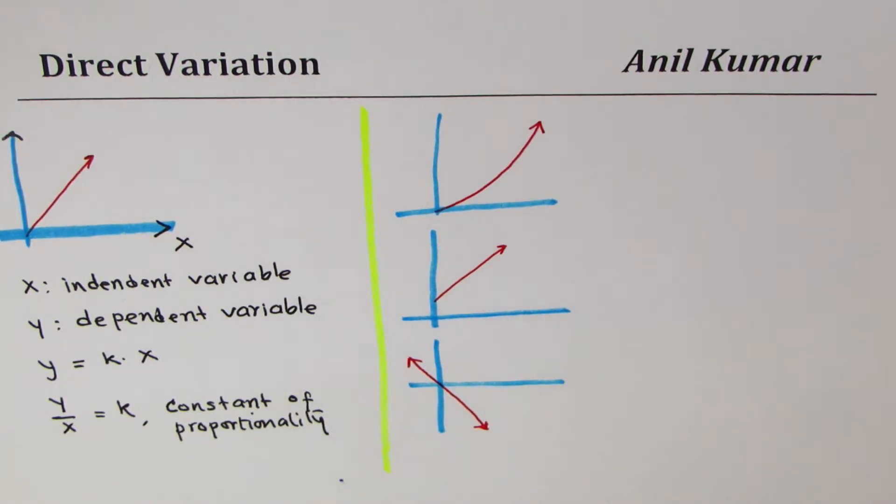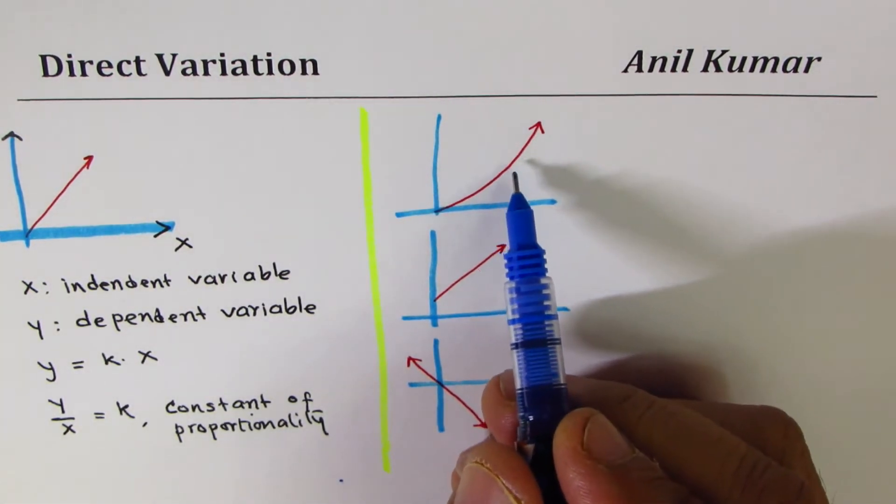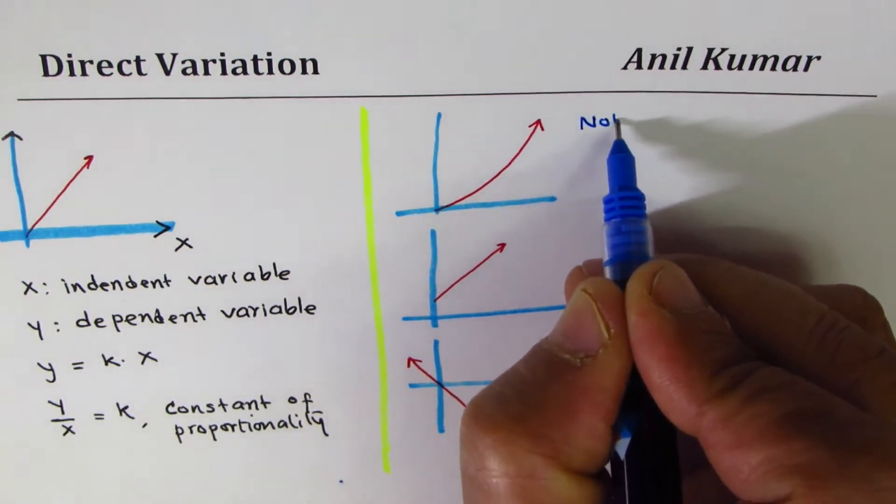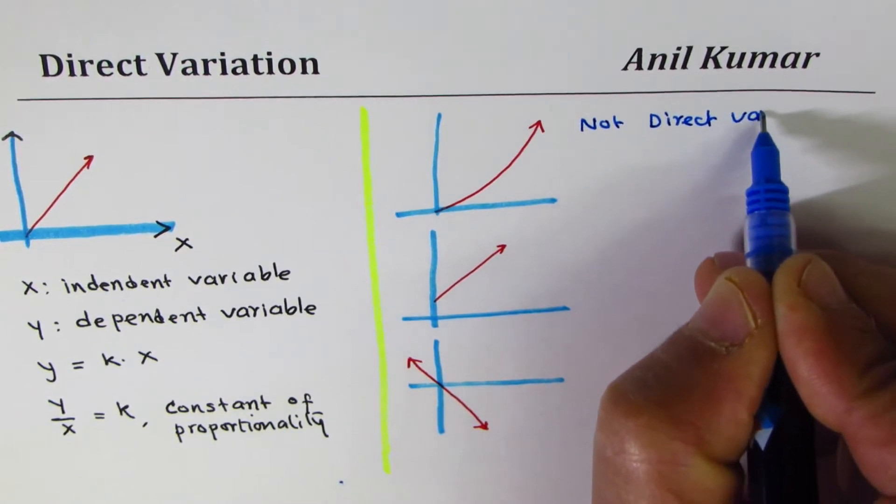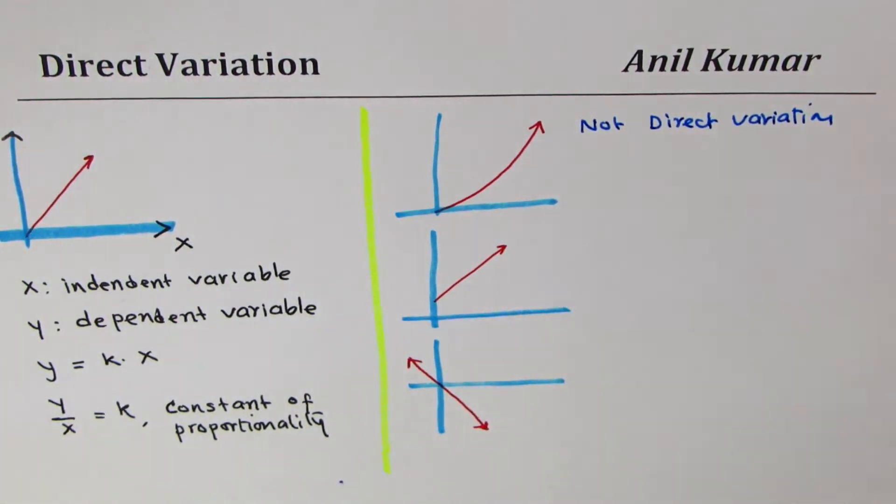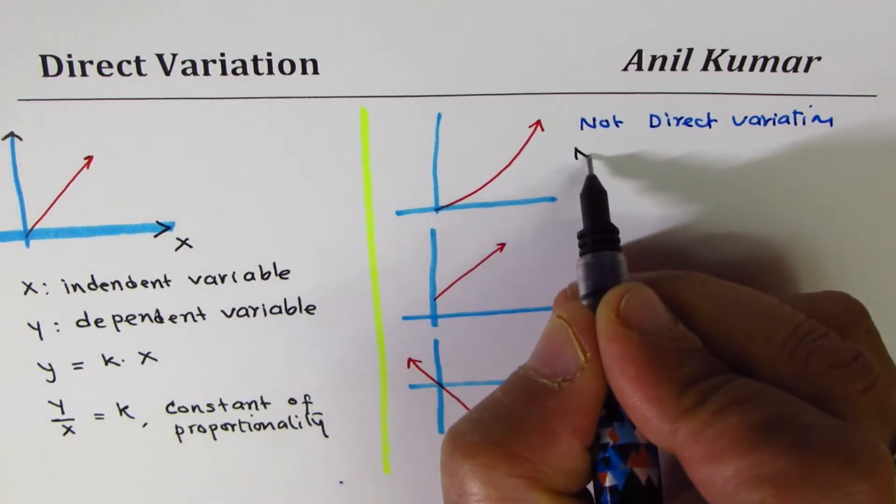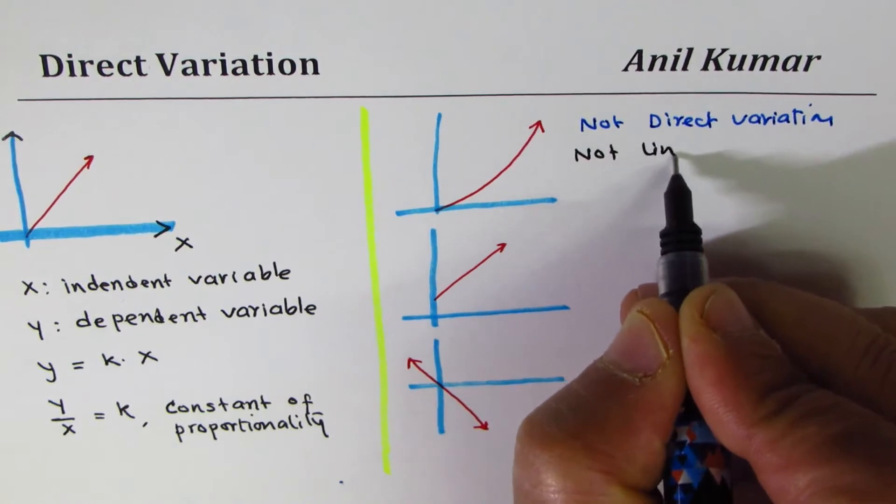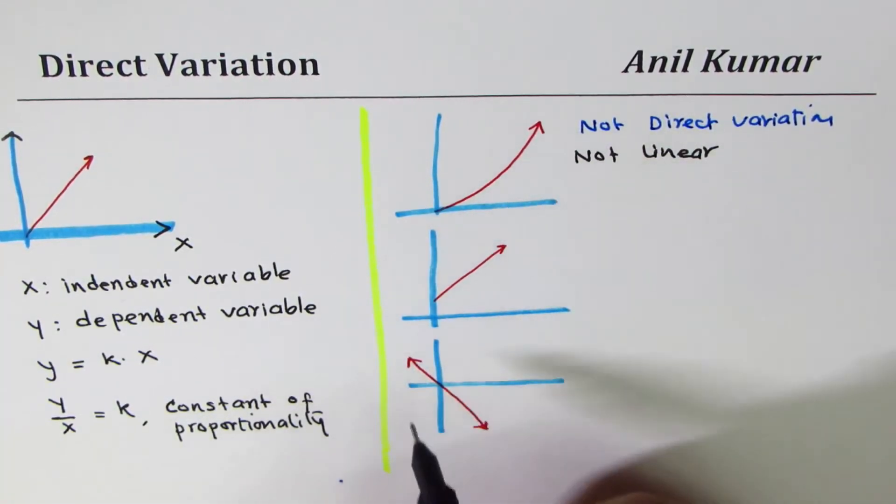You can pause the video and answer the question. Now here this is not direct, this is not direct variation. Can you tell me the reason? The reason is it is not linear, so it has to be a straight line, it has to be linear.